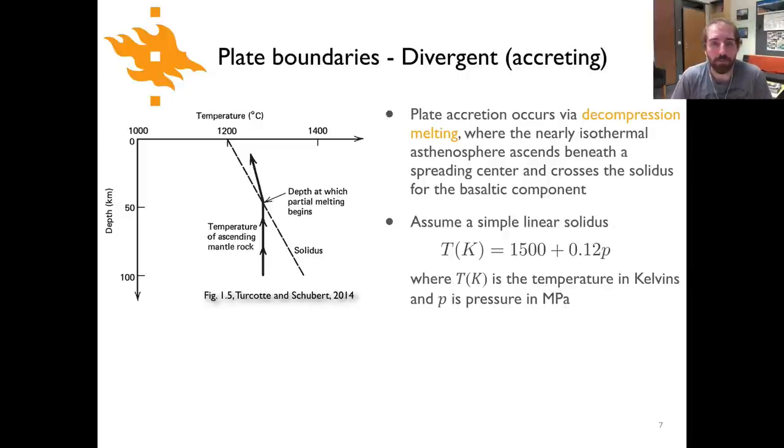We can actually, using a very simple linear solidus, make some predictions about where we might expect this partial melting to begin. This will be one of our first equations that we can play with a little bit. It's a very simple one. The linear solidus in this case is T(K) = 1500 + 0.12p, where p is the pressure in megapascals. That's where the linearity comes in—it's just a constant number in front of pressure which is going to increase with depth.